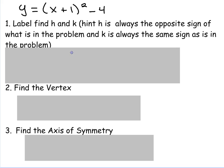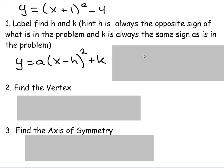First thing we're going to do is label the H and K. H is always the opposite sign because of the negative sign in front of the H. We always want to switch that sign to whatever it happens to be. And the K, because it's a positive in front of it, always stays the same. So in this case, my H is negative 1 and my K is negative 4 because it's always the opposite sign of that one and the same sign of that one.